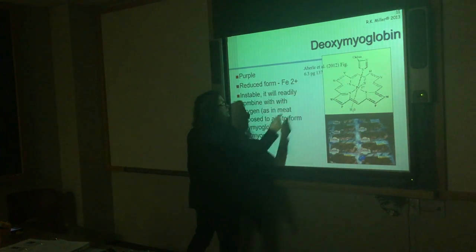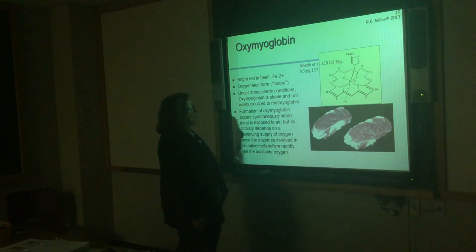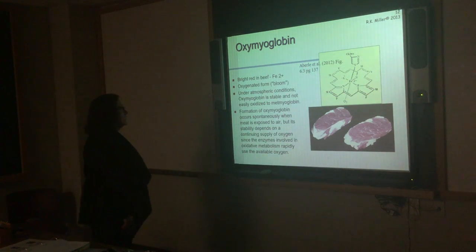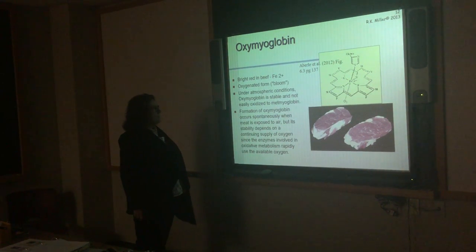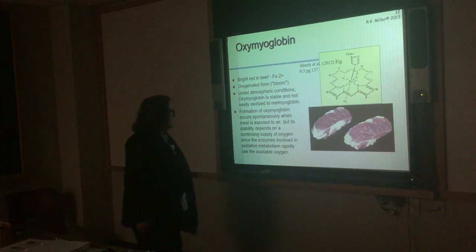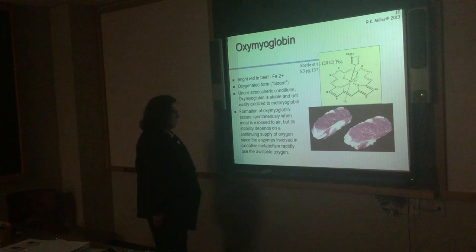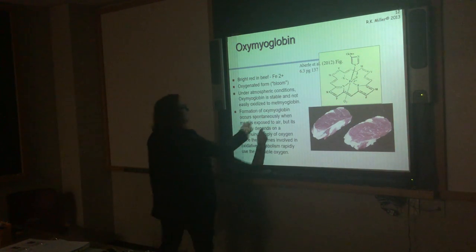Oxymyoglobin looks a lot better — bright cherry red. Iron is still in the reduced Fe²⁺ form, but this is the oxygenated form where you have oxygen on the ligand. Under atmospheric conditions, oxymyoglobin is very stable and not easily oxidized to metmyoglobin. We get oxymyoglobin formed spontaneously when meat is exposed to air. How stable that color is depends on the continuing supply of oxygen, because enzymes involved in oxidative metabolism will use up oxygen that's present — which is why more oxygen is used in modified atmosphere packaging.